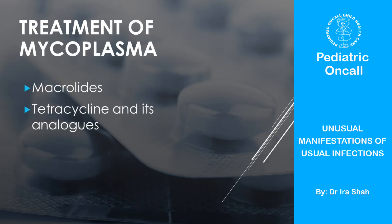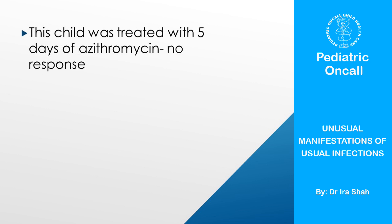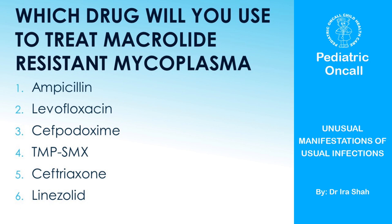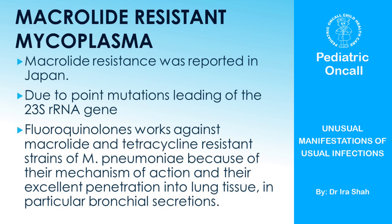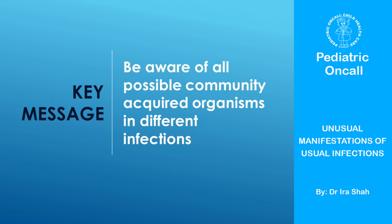Treatment-wise, we know we are supposed to use macrolides, or in older children we can use tetracycline. In this child, we gave five days of azithromycin. After we got the mycoplasma positive result, there was no response. What do you want to do? Everybody says levofloxacin — that's correct. We can use quinolones, and there have been reports that for macrolide-resistant mycoplasma the drug of choice is a quinolone because of their mechanism of action and good penetration into lung tissue. The key message from this case is that we need to know for a particular disease what the likely organisms are, even if they don't fit into the expected age group, so that we don't miss a particular infection.